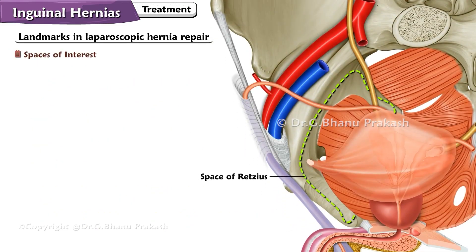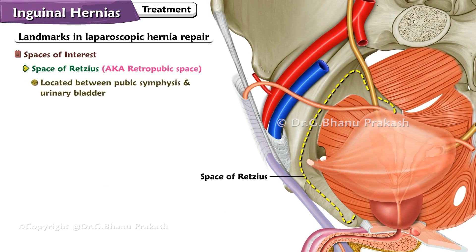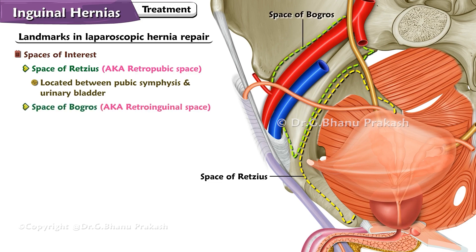Spaces of interest: The Space of Retzius, also known as the retropubic space, is located between the pubic symphysis and the urinary bladder. The Space of Bogros, also known as the retroinguinal space, is positioned deep to the inguinal ligament, adjacent to the Space of Retzius.